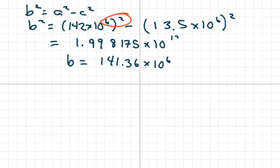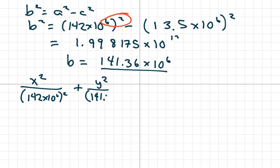So now we can write the equation. The equation is going to be X squared over A, which is 142 million. And then your B, which we just found, is 141.36 times 10 to the 6th squared. And that equals 1.